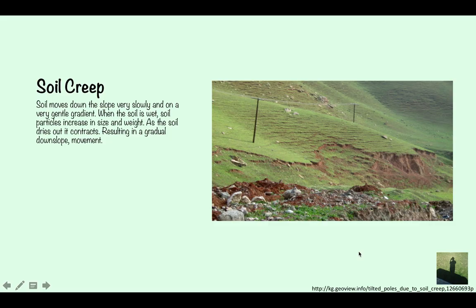Soil creep. Soil moves down the slope very slowly and on a very gentle gradient. When the soil is wet, soil increases in size and weight and as the soil dries out it contracts resulting in a gradual downslope movement. The soil gets bigger and then it gets smaller and as this happens it expands and contracts and it just very slowly, very gently moves down the slope. As you can see here along this bit the soil has moved down and over time if you've got poles in the soil it's going to cause them to tilt. This at one point would have been straight up but now it's bending downwards because of soil creep.